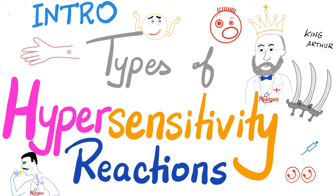This classification is based on what? It's based on time mainly. Type 1 is the fastest. Type 4 is the most delayed. With that said, now let's get started.